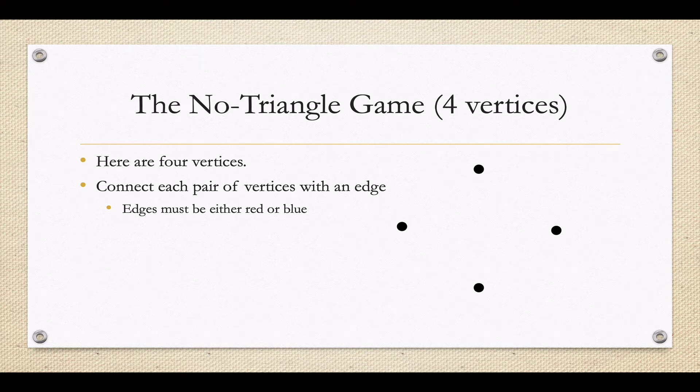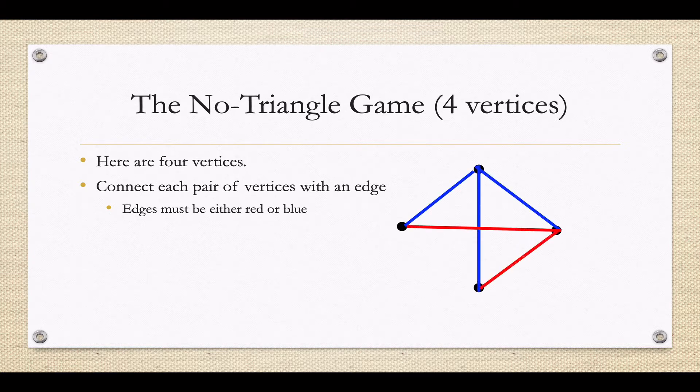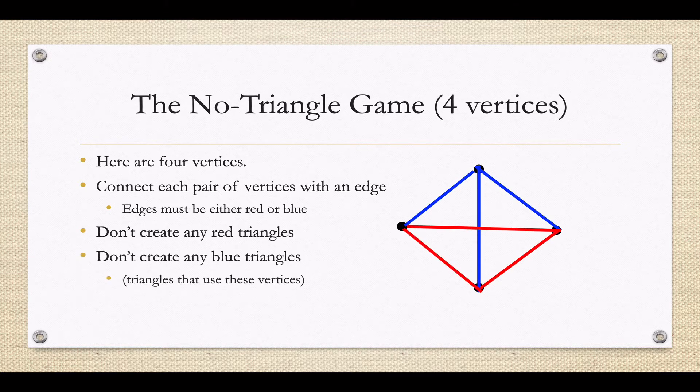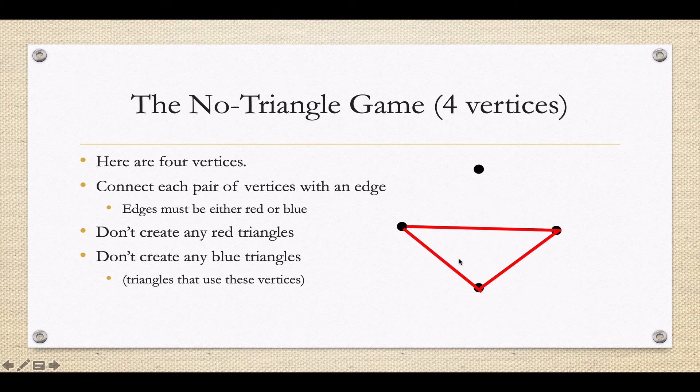So in the previous video, I introduced this game called the no triangle game, where we start out with some number of vertices, four in this example, and we connect all the vertices with edges. The edges are either red or blue, and our big goal is to avoid monochromatic triangles, so a red triangle or a blue triangle.